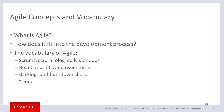In the Agile Concepts and Vocabulary section, we'll describe what the Agile development process is and why it came about. You'll see how teams use it as they develop their products. You'll get comfortable with the vocabulary of Agile, including the terms scrums and scrum roles, boards, sprints, and user stories, backlogs and burndown charts, and of course, the term done.